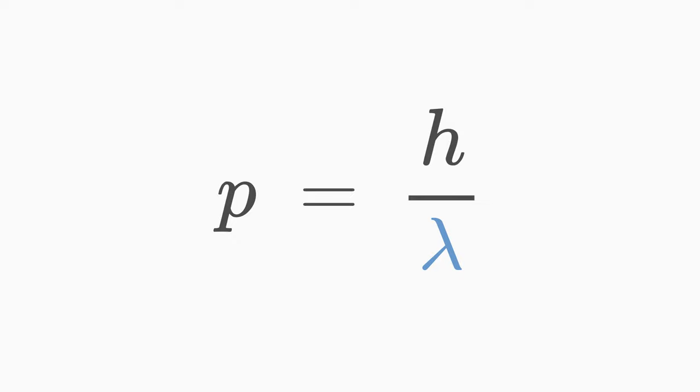Analogously, a wavelength can be assigned to a particle with mass which has a momentum p. For this purpose, we rearrange the momentum with respect to the wavelength lambda. Lambda is equal to h over p.